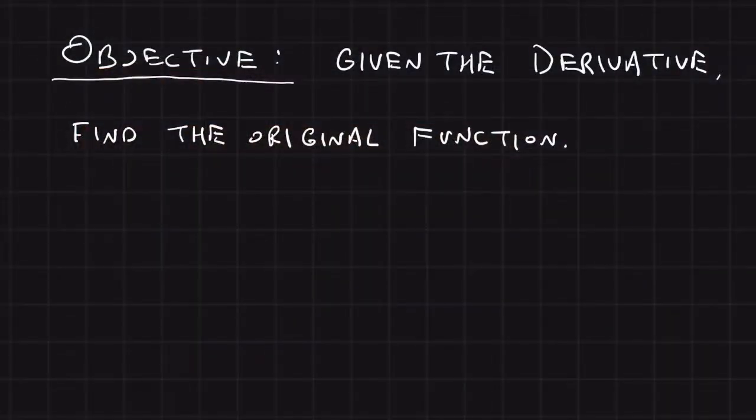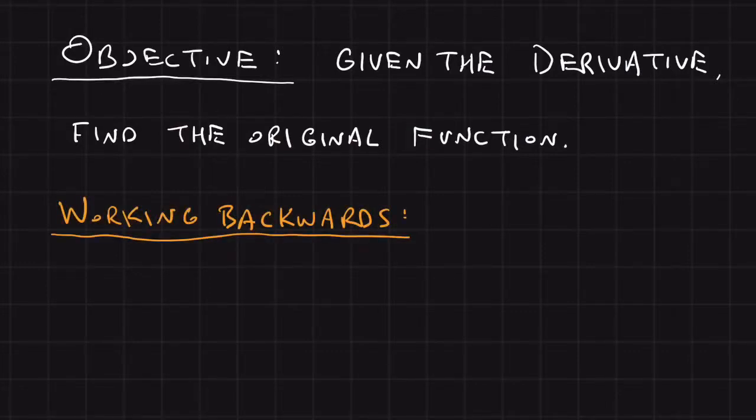Our objective is given a derivative, find the original function. And the way that we'll do this is by working backwards.